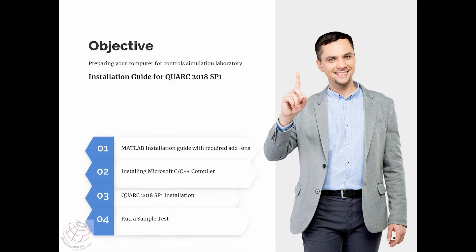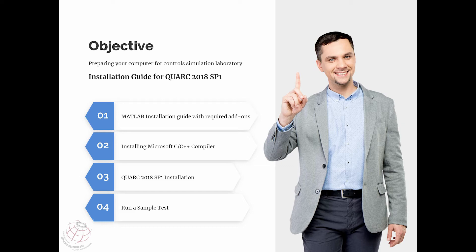First I will go through MATLAB installation and required add-ons. Second, I will go through installing a C compiler. Third, I will install Quark 2018 Service Pack 1. Once everything is done, I will run a sample test to check how it works. The Quark product I have is the Qube Servo 2, and I will run the test based on that.